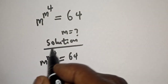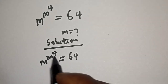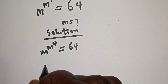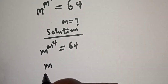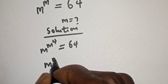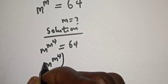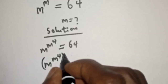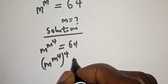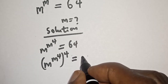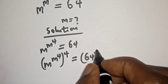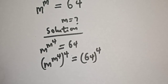Let's multiply the exponent of both sides — or the power of both sides — by 4. That is, m raised to power m raised to power 4, to the power of 4, is equal to 64 raised to power 4.